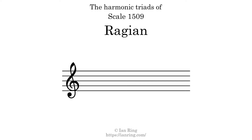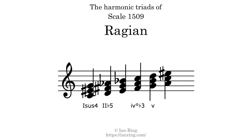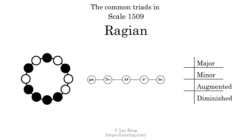Here are the harmonic triads present in this scale. The diagram in the center is a graph of parsimonious voice leading between triads. There is one major triad, two minor triads, one augmented triad, and one diminished triad. Here is a Hamiltonian path of parsimonious voice leading that uses all the triads.